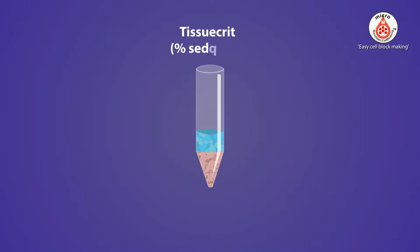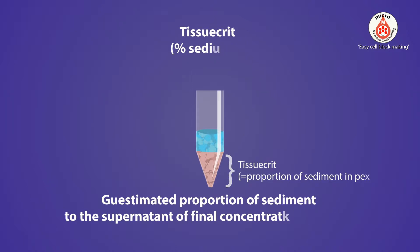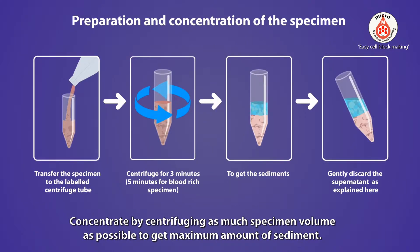Tissue quit is the proportion of sediments with diagnostic cellular material without blood in the final concentrated specimen. Concentrate by centrifuging as much specimen volume as possible to get the maximum amount of sediment.